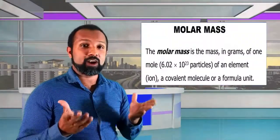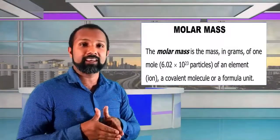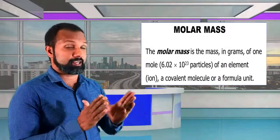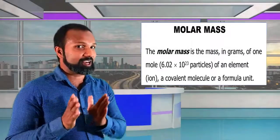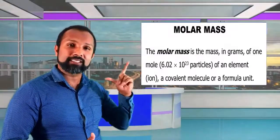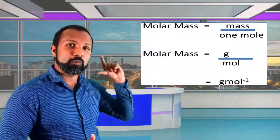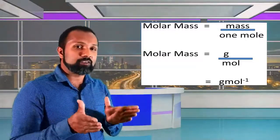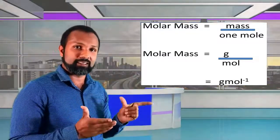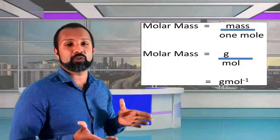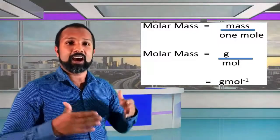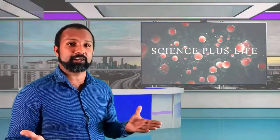Next, I'm going to explain the concept of molar mass. Molar mass means the mass of one mole of any element or compound. Earlier we learned about relative atomic masses and relative molecular masses — those don't have units. But keep in mind that molar mass does have units. Molar mass equals the mass of a substance divided by one mole. Since mass is measured in grams and the amount is in moles, the unit of molar mass is grams per mole (g/mol).